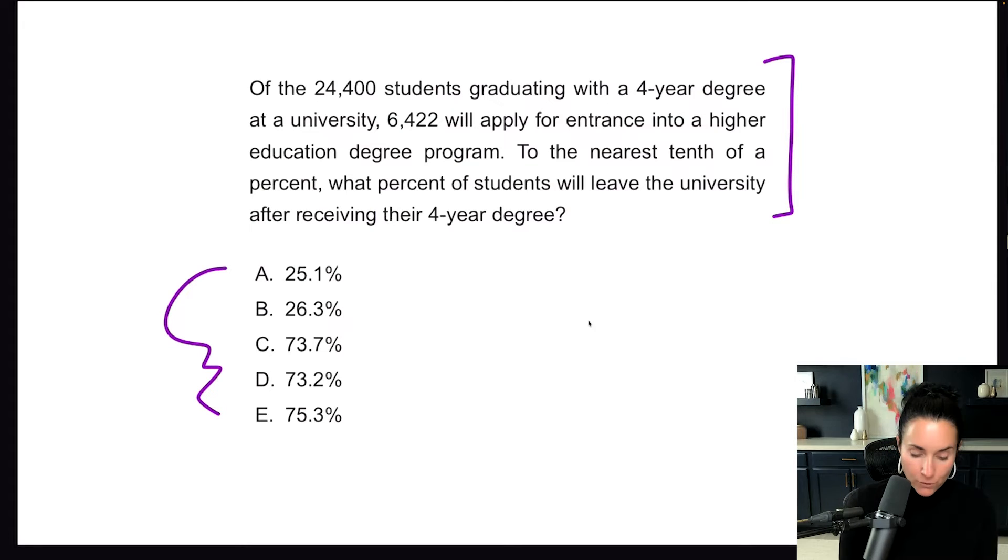Of the 24,400 students graduating with a four-year degree at a university, 6,422 will apply for entrance into a higher education degree program. To the nearest tenth of a percent, important, what percentage of students will leave the university? This is important after receiving their four-year degree. So 6,422 are going to go on and get higher education degrees. The rest are going to leave the university.